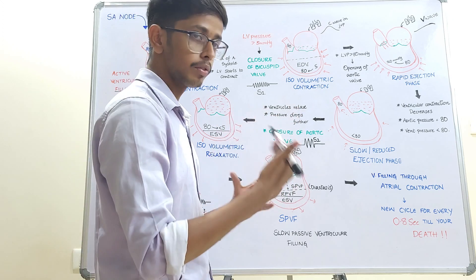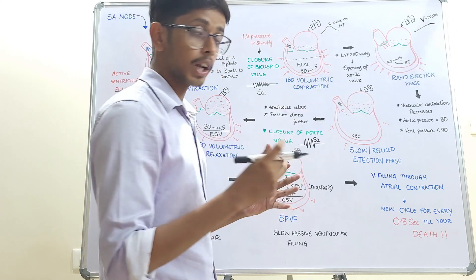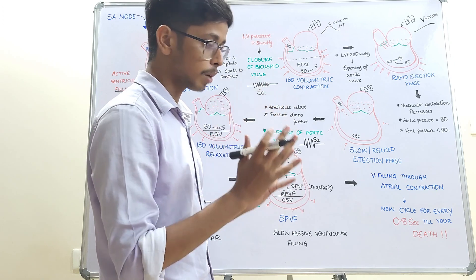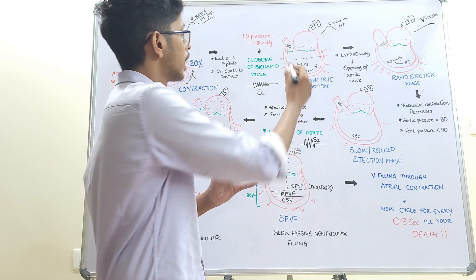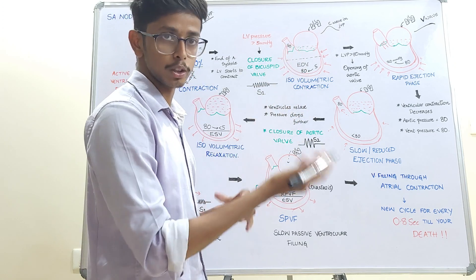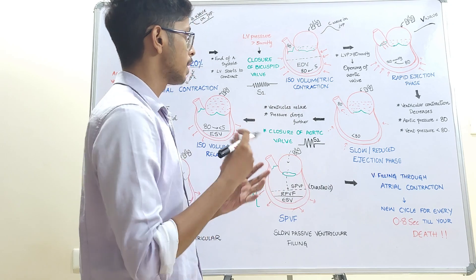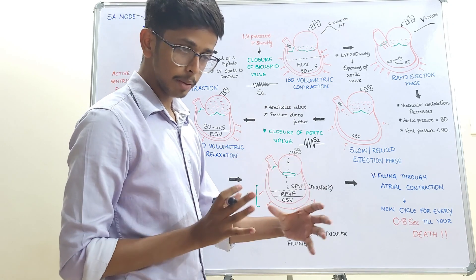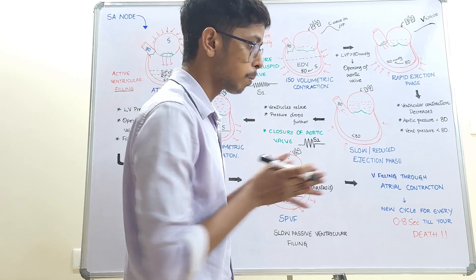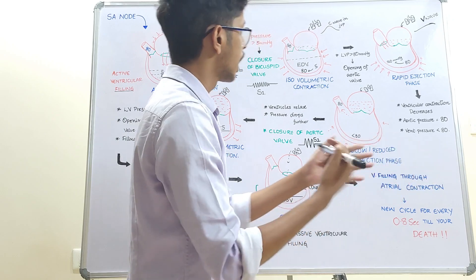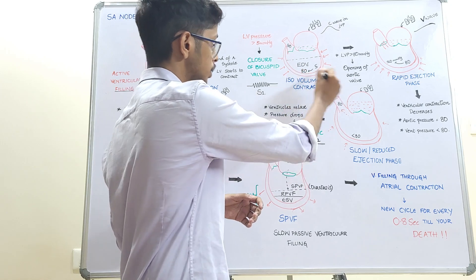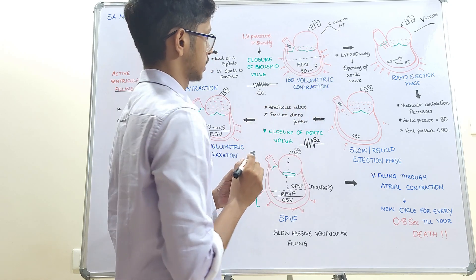During isovolumetric contraction, the ventricular pressure increases from 5 to 10 to 20 to 30 mmHg. The ventricle is a thick muscle and contracts powerfully, generating large amounts of pressure. The diastolic pressure in the aorta is 80 mmHg. Only when the ventricular pressure exceeds 80 mmHg can the ventricular blood push open the aortic valve and blood can flow into the aorta. Until then, the ventricle remains in the phase of isovolumetric contraction.